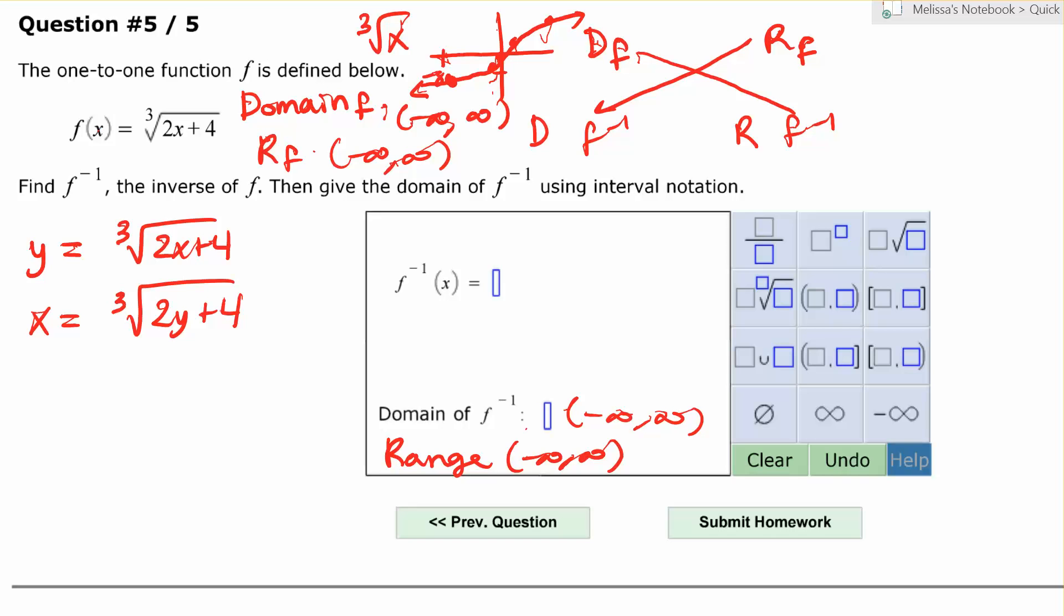Now I'm going to try to solve for y. Since y is inside of a radical, I need to get rid of the radical first. The inverse of a cube root is a third power. So I'm going to raise both sides to the third power. So I get x cubed equals, here the cube root cancels, and I bring out 2y plus 4.